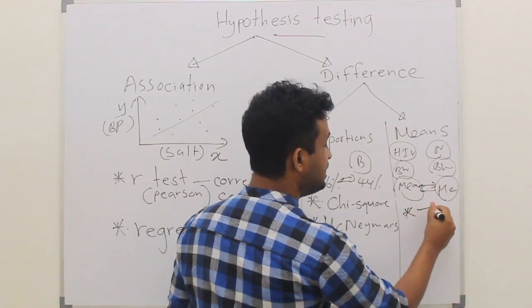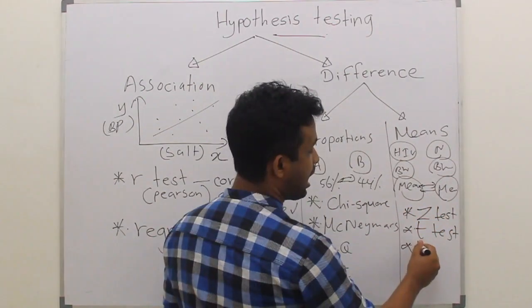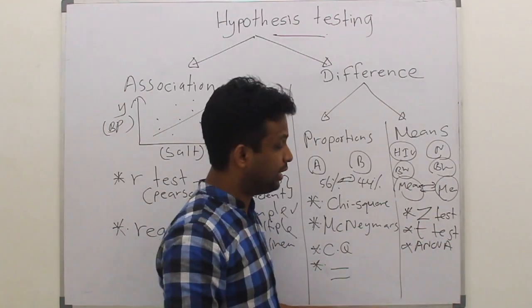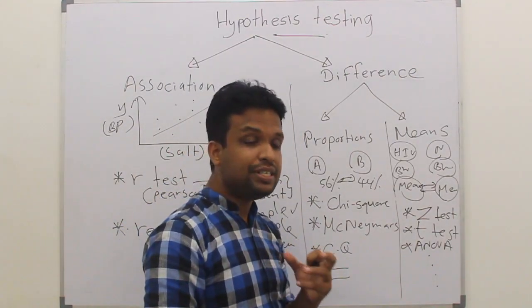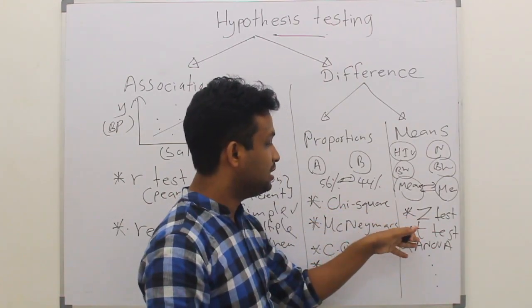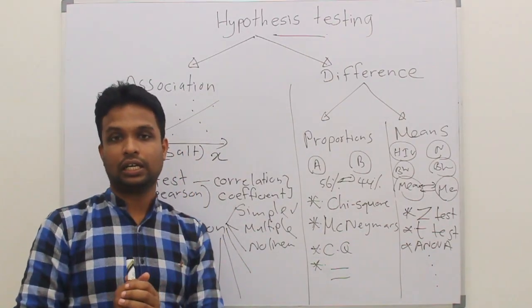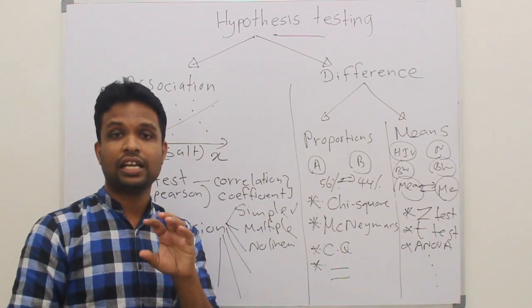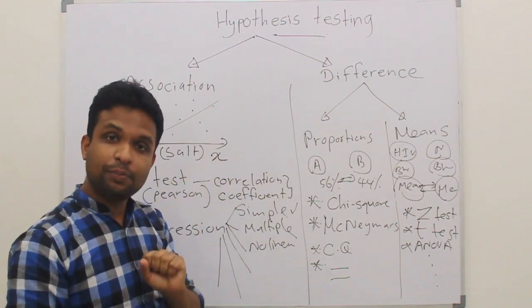What are the tests available to test this kind of hypothesis? We have Z-test, T-test, ANOVA and many other tests that you can list in this category. During this basic statistics lecture, I will be discussing chi-square test, Z-test, T-test and ANOVA.